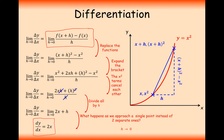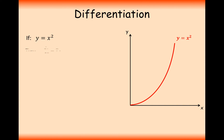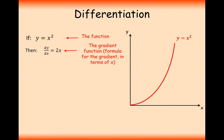You use whatever function you're given to substitute in the values, expand your brackets if you need to, and then divide by h. When it comes to taking the limit: if a part of the expression doesn't have an h in it, that expression remains as it is; if it does have an h in it, then it disappears because h tends towards zero. So if y equals x squared, dy by dx equals 2x — this is the gradient function, so we can plug in any value of x and work out the gradient at that point.